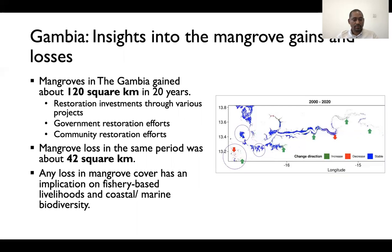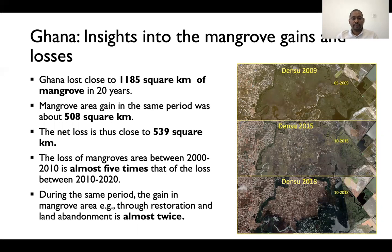This loss is very critical because it is not small mangrove being lost — this is mature mangrove which is being cleared for different purposes. In Ghana it's a similar story but a different version. The country lost most of its mangroves in the last 20 years compared to what it gained, and the net loss is about 540 square kilometers. This is quite significant because in Ghana, the livelihoods depending on these coastal ecosystems are much larger than in the Gambia.